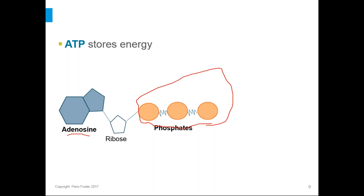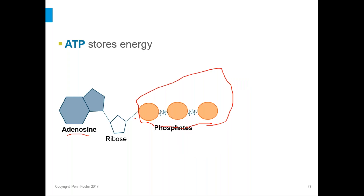ATP is a pretty big molecule made of adenosine, ribose, and three phosphate groups all attached together. The last phosphate can be broken off, releasing the energy that was stored in that bond. When the phosphate group is removed, the molecule only has two phosphates, so it becomes ADP — adenosine diphosphate. ATP stores the energy; one of the phosphates gets broken off, the energy is released, and it becomes ADP. This can be recycled: when the cell has more energy, it can put that phosphate back on by absorbing energy and store it for later.